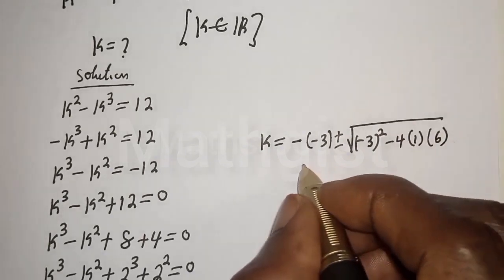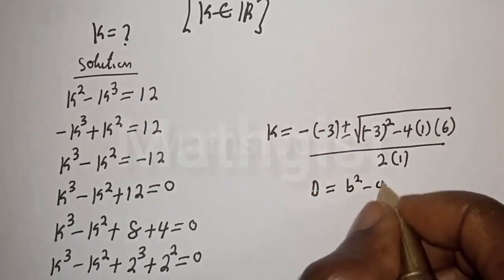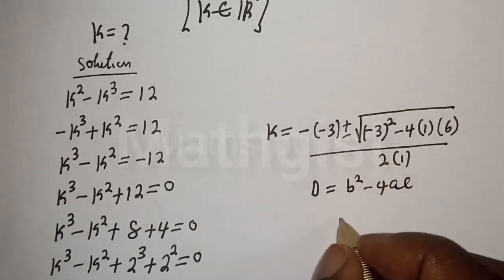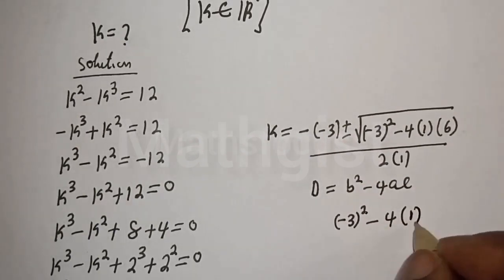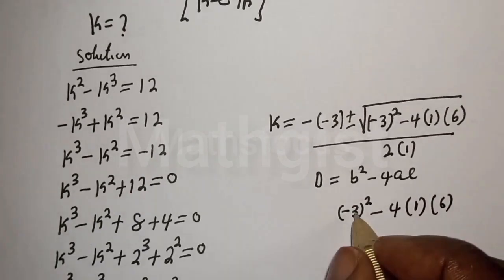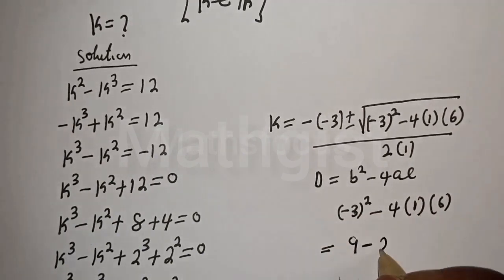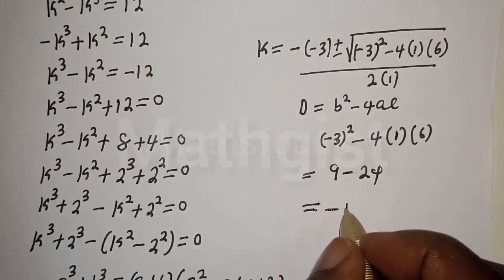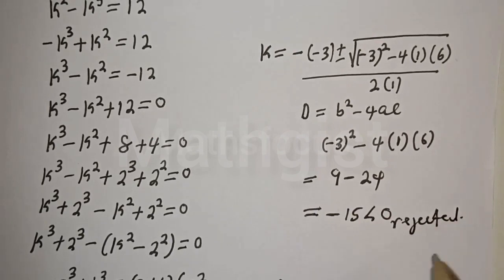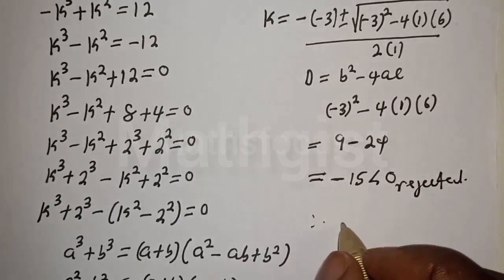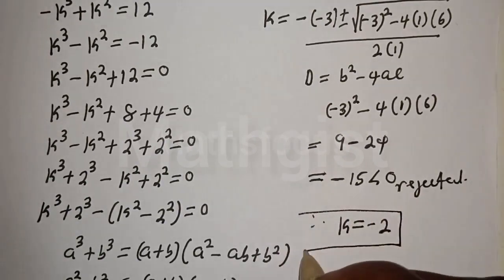The discriminant is b squared minus 4ac. With b equals minus 3, a equals 1, and c equals 6: discriminant equals 9 minus 24, which equals minus 15. Since the discriminant is less than 0, this case is rejected — no real solution here. Therefore the only solution is k equals minus 2.